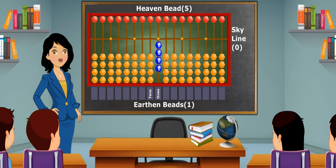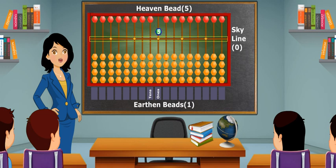In order to represent 5, move all the earthen beads down and make 1 heaven bead touch the skyline.